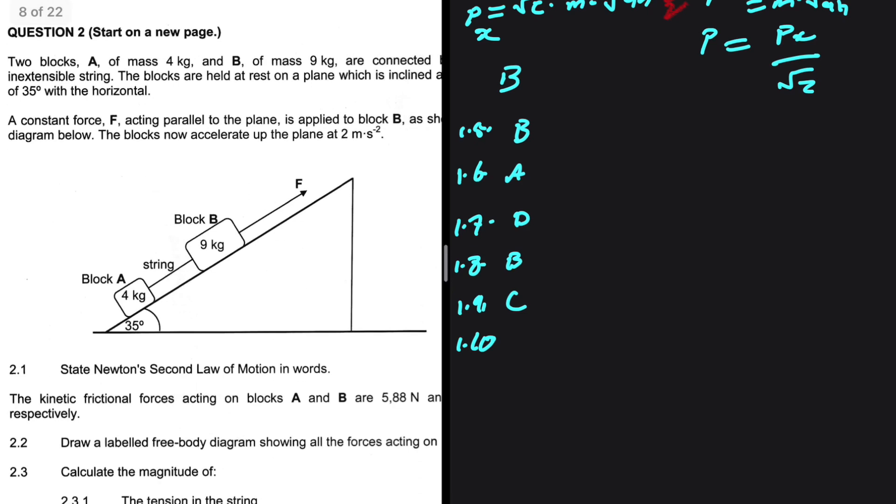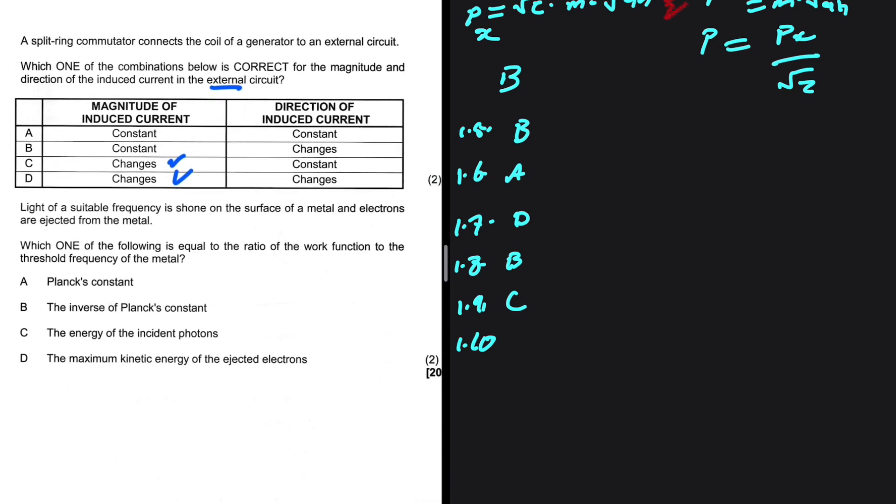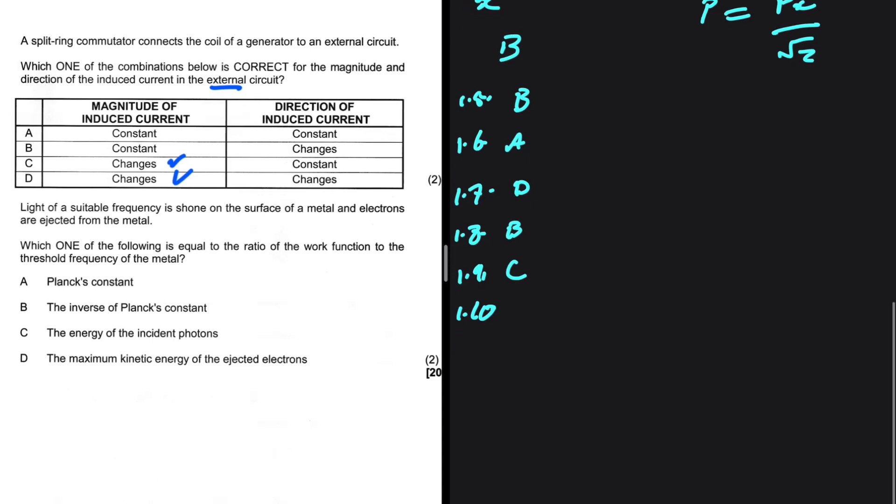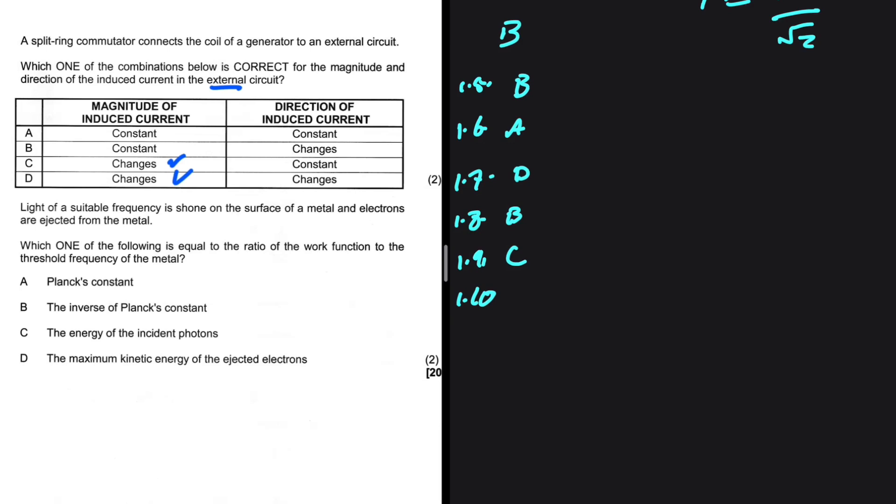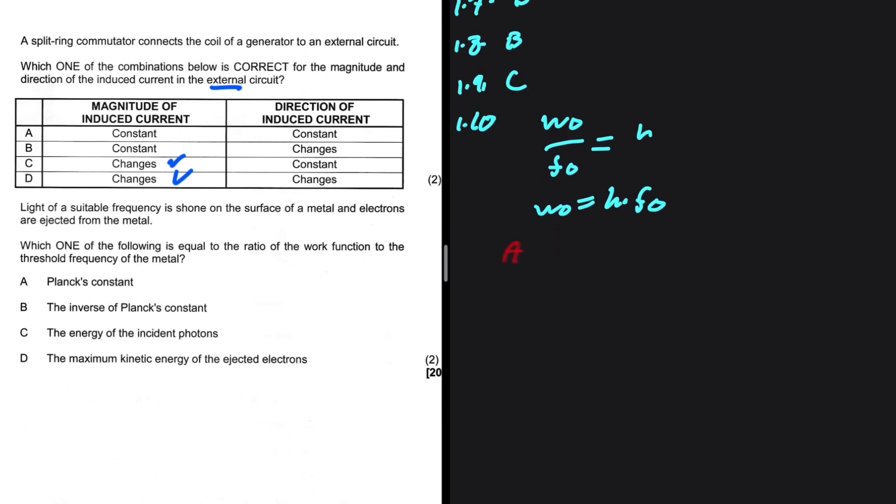1.10: Light of visible frequencies shown on the surface of a metal and electrons are ejected from the metal. Which one of the following is equal to the ratio of the work function to the threshold frequency of the metal? What is work function divided by threshold frequency equal to? It's equal to Planck's constant. Because if you cross multiply, work function is equal to Planck's constant multiplied by threshold frequency. So that is option A. The answer to 1.10 is A.